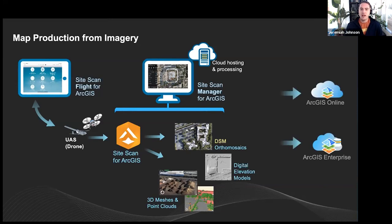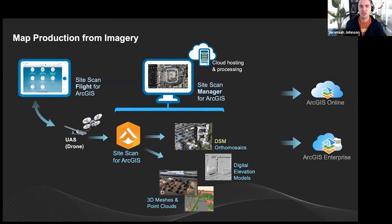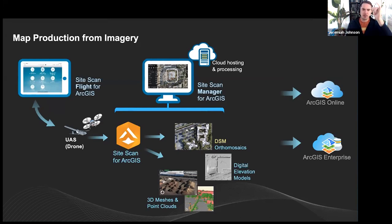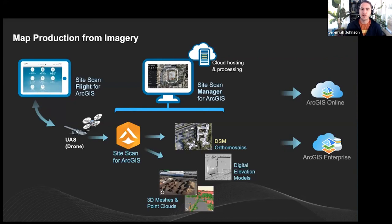There is a connector between Site Scan Manager and ArcGIS Online or ArcGIS Enterprise. With Drone to Map, you run a geoprocessing tool to publish data from desktop to Enterprise or Online. With Site Scan, because it's already in the cloud, you use a cloud connector — you authenticate to your Enterprise portal or ArcGIS Online, select folders and groups, and it creates hosted services and tile caches from the raw data files — LAS files for point clouds, TIFF files for orthomosaics.